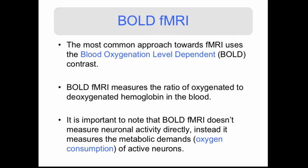The most common approach towards fMRI uses something called the blood oxygenation level dependent, or BOLD, contrast. BOLD fMRI measures the ratio of oxygenated to deoxygenated hemoglobin in the blood. It's really important to note that BOLD fMRI does not measure neuronal activation directly — which is really what we're interested in — but instead measures the metabolic demands of active neurons, so the oxygen consumption.